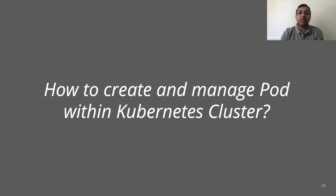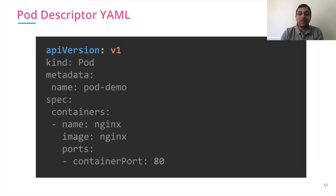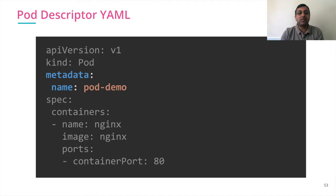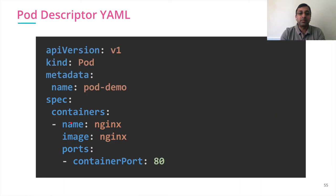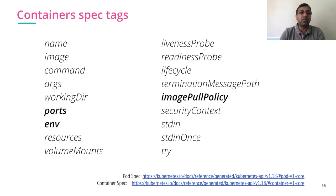To create and manage a pod within a Kubernetes cluster, you use a pod descriptor YAML — everything is defined in YAML files. The first part is the API version, which is the specification version we're going to use. The kind is pod. The metadata is where we specify the name of the pod. The specification part is where we specify the container details: which image to run, what port to expose, and the name of the container. The container specification has many other attributes, like command line arguments, working directory, environment variables, volume mounts, liveness and readiness probes, and image pull policy.